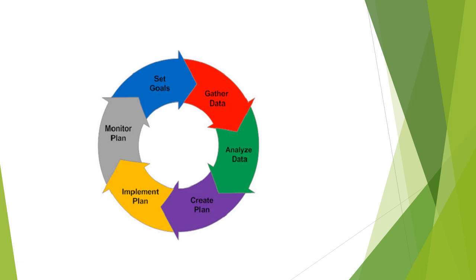The planning process starts from setting goals, also called recognizing the need for action. The second step is gathering data, developing premises. The third is analyzing data, identifying alternatives. The fourth step is creating a plan, selecting alternatives. Then comes implementation of the plan, and finally monitoring the plan — where we analyze whether to continue or stop that policy.